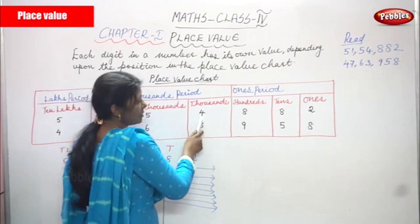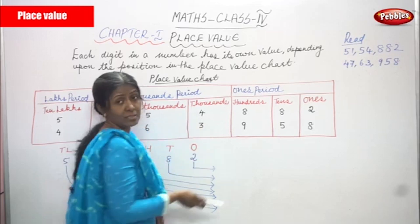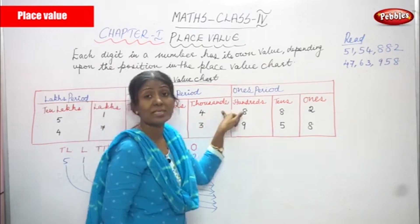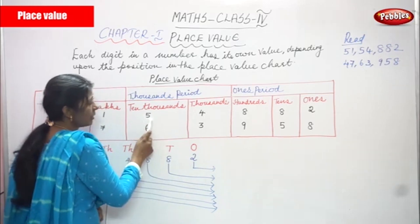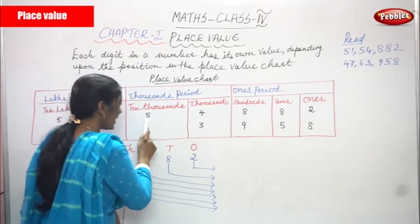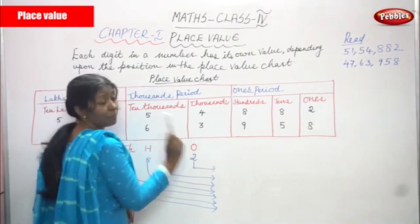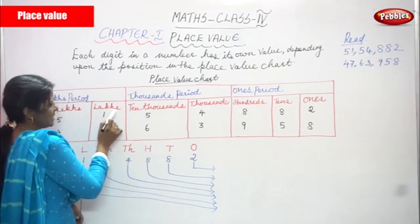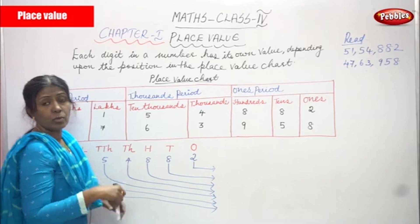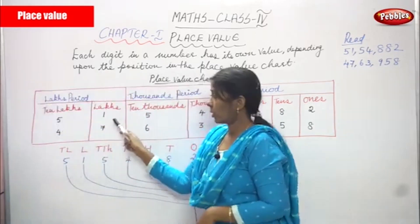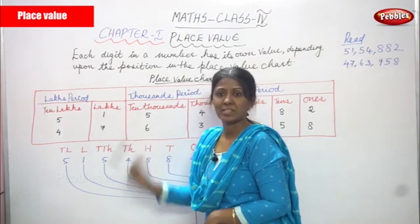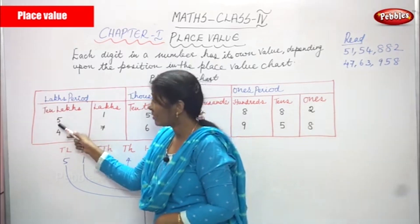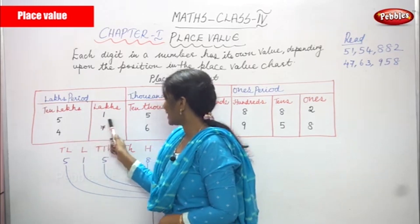Next, what is the number in the thousands place? Four. So four is in the thousands place. Next, ten thousands — what is the number? Five. So five is in the position of ten thousands. And what is the number in the lakhs place? One. And five is in the ten lakhs place.